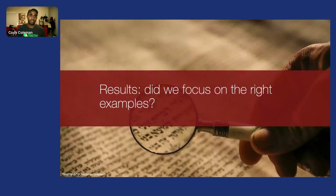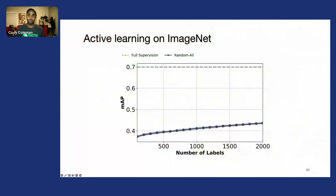To evaluate this and verify we're focusing on the right examples, we evaluated on a number of large-scale datasets. The x-axis is the number of labels, and the y-axis is mean average precision for a subset of classes. The gray dashed line represents performance with full supervision.